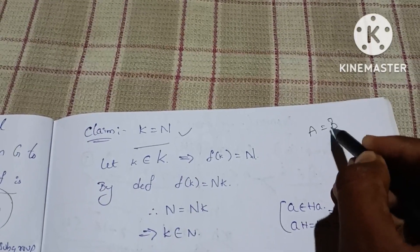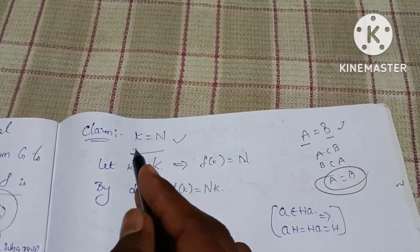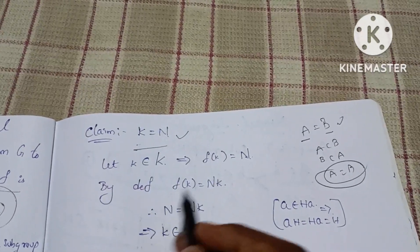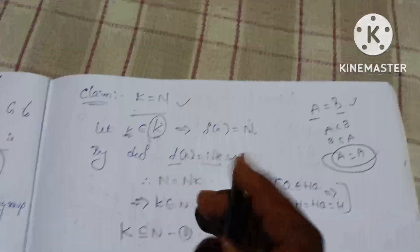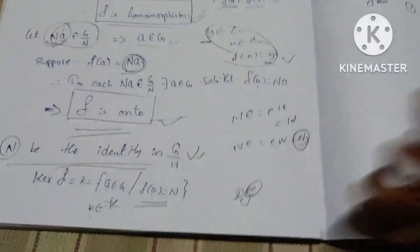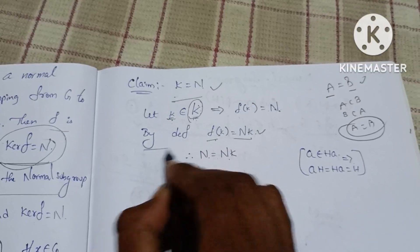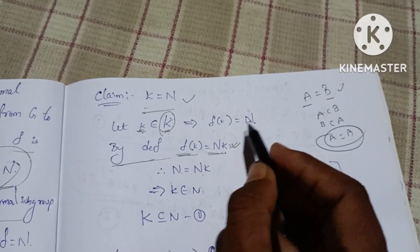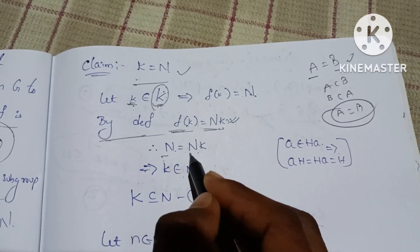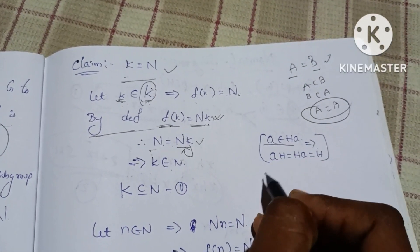To show two sets are equal, we prove A is a subset of B and B is a subset of A, then A equals B. So we prove K is a subset of N and N is a subset of K. Let small k belong to capital K. Then F(k) = N, which by definition of F means Nk = N, so k belongs to N. Therefore K is a subset of N.